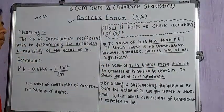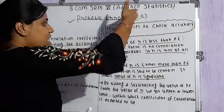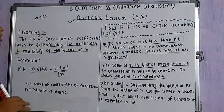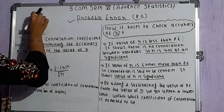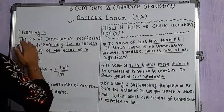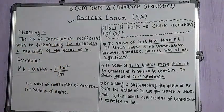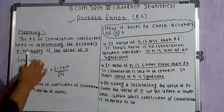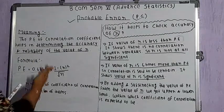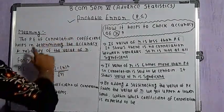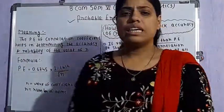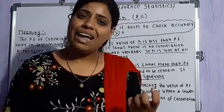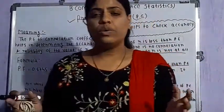First of all, probable error is represented by PE, as you can see written on the board. In terms of meaning, the probable error of the correlation coefficient helps in determining the accuracy and reliability of the value of R. Some words here are most important — determining the accuracy and reliability of the value of R. So, probable error is essentially a tool which helps us to check the accuracy of the value of the coefficient of correlation.